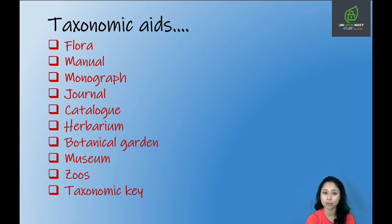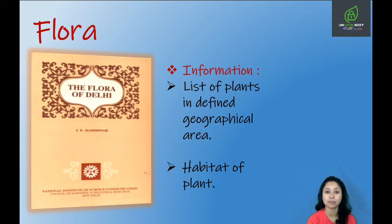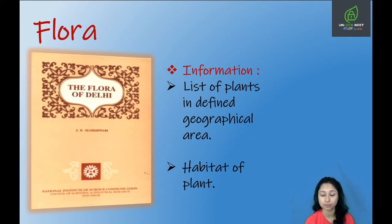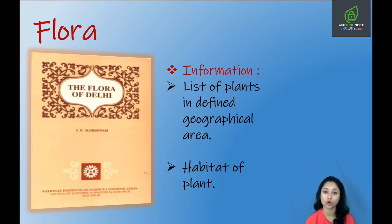Flora is a booklet which has the list of all the plants present in a particular geographical area. A defined area mein jo bhi plants present hain, unko enlist kiya jata hai along with the habitat of the plant. One example is the Flora of Delhi by J.K. Maheshwari — is book mein aapko plants ki list milegi jo Delhi mein found hoti hain. There can also be the flora of other places like Lucknow or Kanpur.